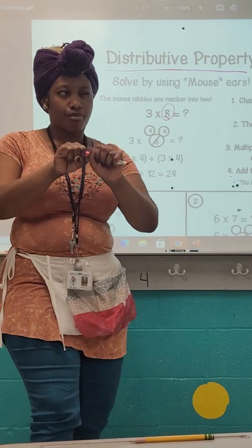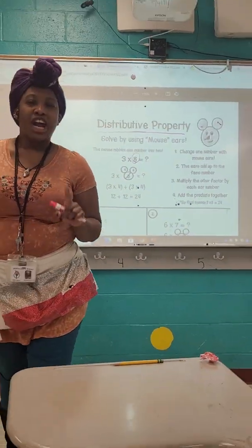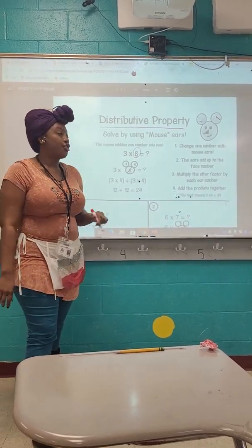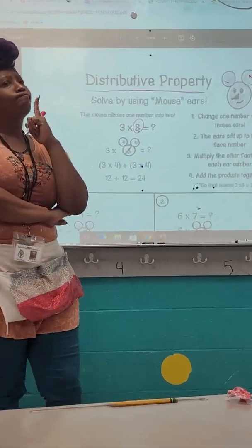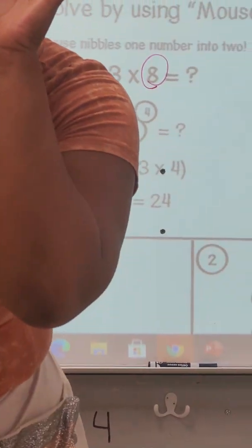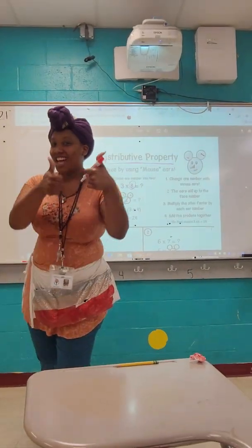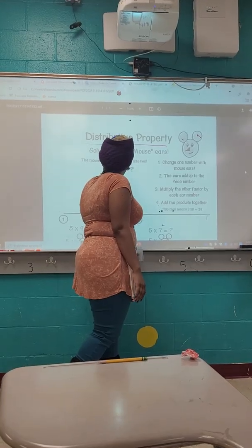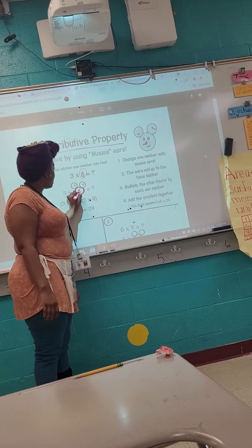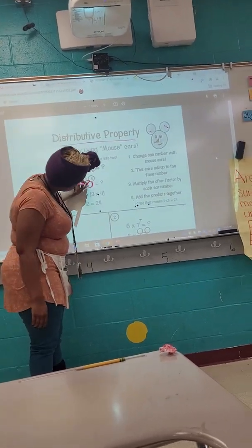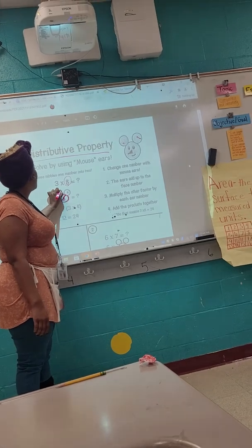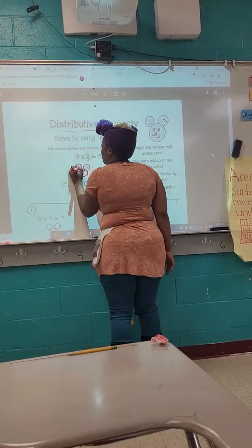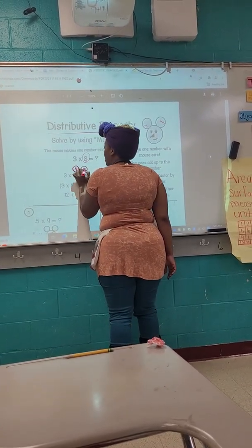Remember, distributive property means we're breaking apart. When we break our eight apart, we'll have two numbers — what are two numbers that we can add together to equal eight? Awesome job, our answer is four. I'm going to make my circle, circle my head. Our number eight is right inside. We're going to slice our eight and add two mouse ears. We're going to put our number four right inside those mouse ears.